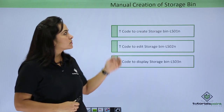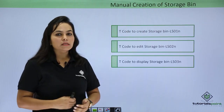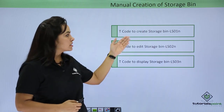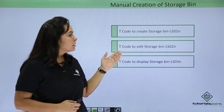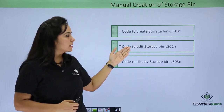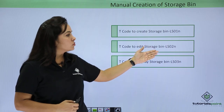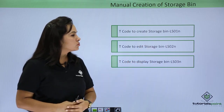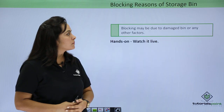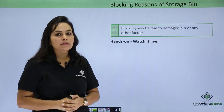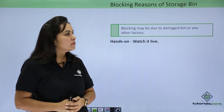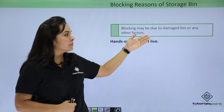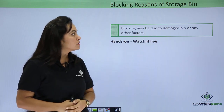Next we have manual creation of storage bins. If you want to create storage bins manually, the transaction code is LS01N. To edit, the transaction code is LS02N, and to display, the transaction code is LS03N. Next we have blocking reasons of storage bin — we can block certain bins due to reasons like a damaged bin or any other factors.